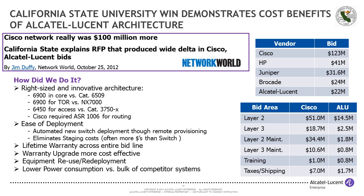One main reason was that we introduced the 6900 as a compact core at CSU and leveraged virtual chassis technology. Another factor was that our switches can be deployed in both a campus and a data center switching environment. CSU needed both, and across their 18 campuses, they would sometimes have a switch not quite ready for campus deployment. Rather than let it sit idle, they simply redeployed it in their data center — a really important attribute for a customer with the size and complexity of CSU.